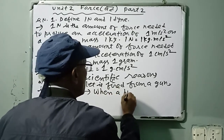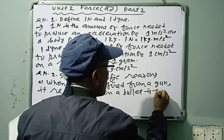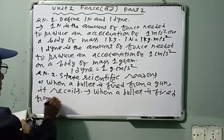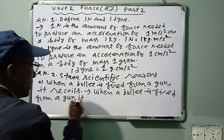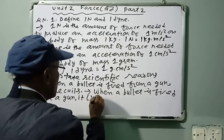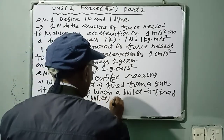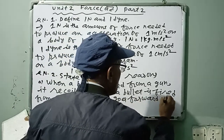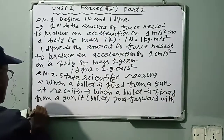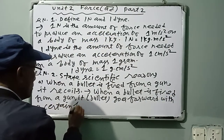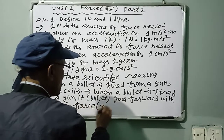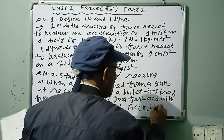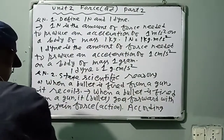When a bullet is fired from a gun or rifle, the bullet goes forward with a sorted force — that force is the action. According to Newton's third law of motion, the gun recoils backward as the reaction.